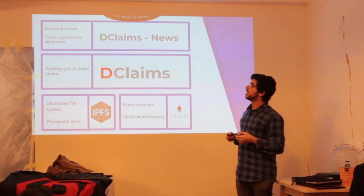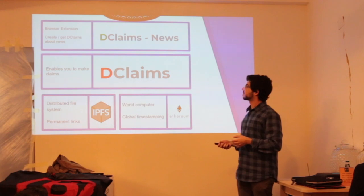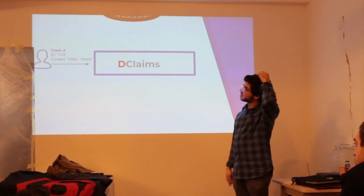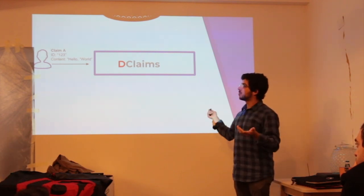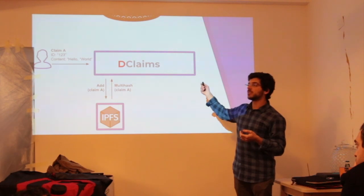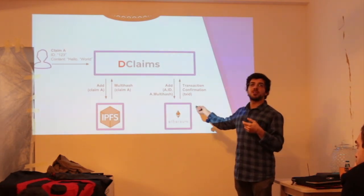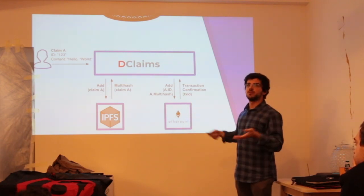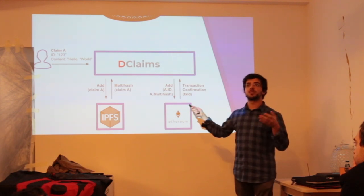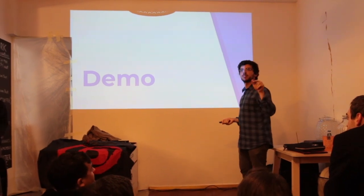The application is a browser extension you can install on Chrome or Firefox, which allows you to interact with pretty much any news website to make and retrieve claims. At a high level: subject A, let's call it Alice, issues a claim with ID 123 and content 'hello world.' That claim is stored on IPFS, which returns a multi-hash — the identifier of the object stored on IPFS. The claim then takes that identifier and stores it on an Ethereum smart contract, which returns a transaction confirmation, confirming that transaction has been accepted on the network.